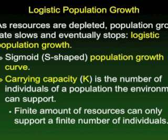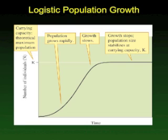A more realistic description of actual population growth is logistic population growth, which accounts for the population running into resource limitations. The curve takes on a sigmoid shape, or S-shape, and the leveling-off point is the carrying capacity — the number of individuals the environment can support in a particular area. As you can see in this diagram of the logistic curve, the population grows very quickly, then starts to slow down and levels off as it reaches the carrying capacity.